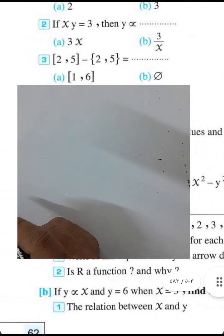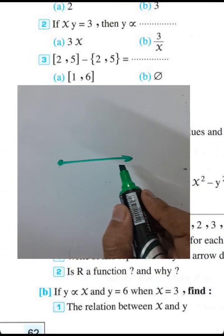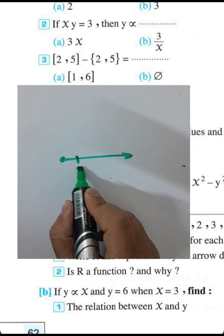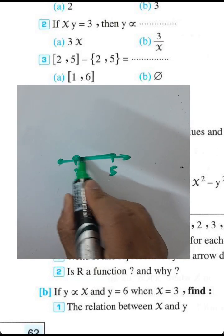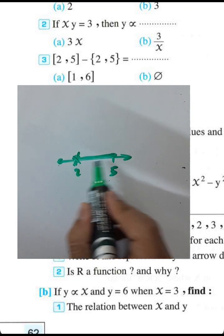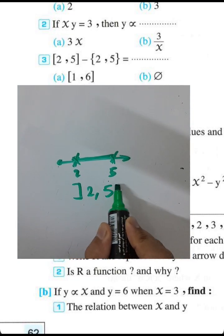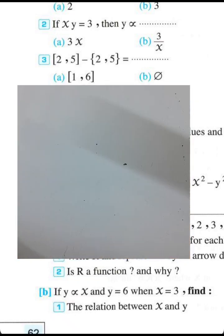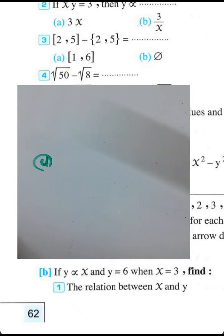Question number 3: we have a closed interval from 2 to 5. We must cancel the endpoints, so it will be an open interval from 2 to 5. The result will be the open interval (2, 5).